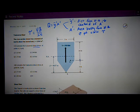Back to this tau equals VQ over IT formula. I is on the bottom here, moment of inertia. T is the width or the thickness.